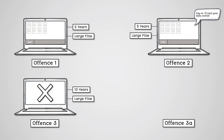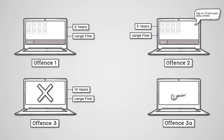Offense 3a: making, supplying or obtaining anything which can be used in computer misuse offenses — for example, creating a malware program such as a virus or worm that can be used to gain access to a system and/or harm data. This can be punished by up to two years in prison and/or a large fine.